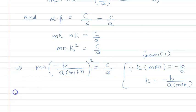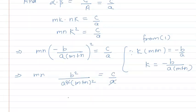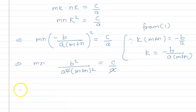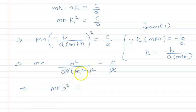So m into n, that is minus b upon a m plus n, and the whole square, equal to c upon a. Further we simplify. So here m into n, b square will come, and minus will become plus, upon a square m plus n whole square equal to c upon a. Here a and power will cancel out. So we get m into n b square equal to, cross multiplying, m plus n whole square into a c. So this relation we are getting after solving.